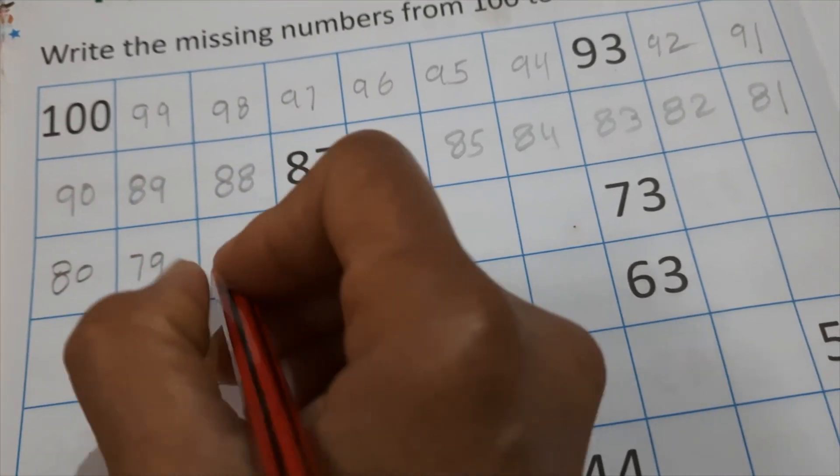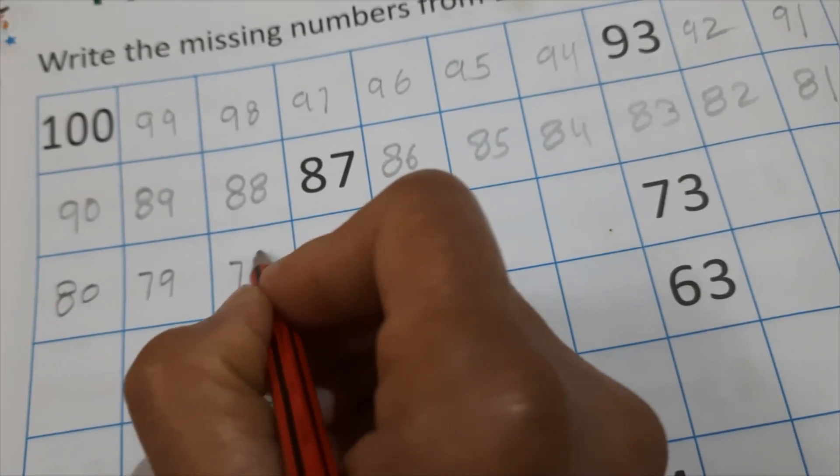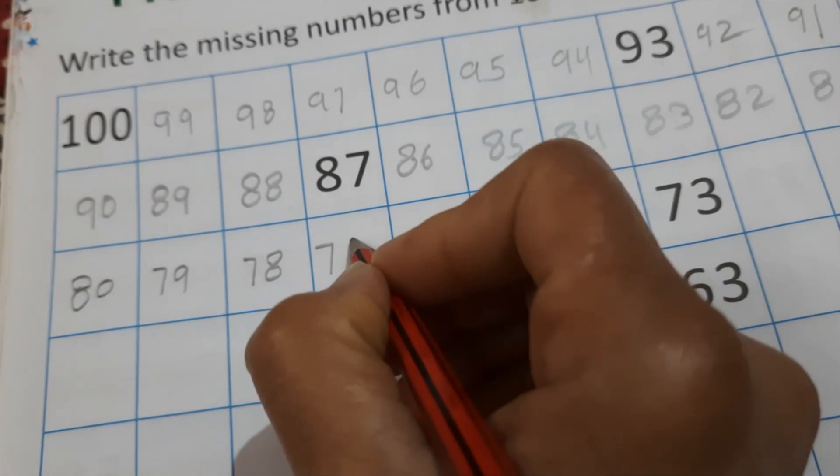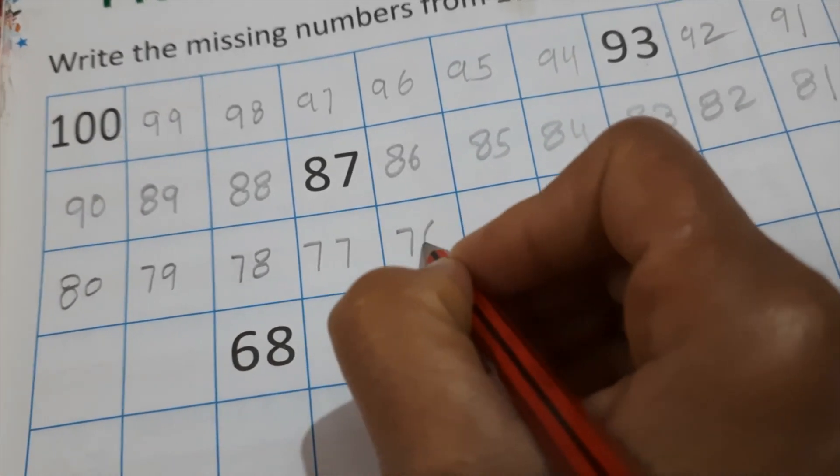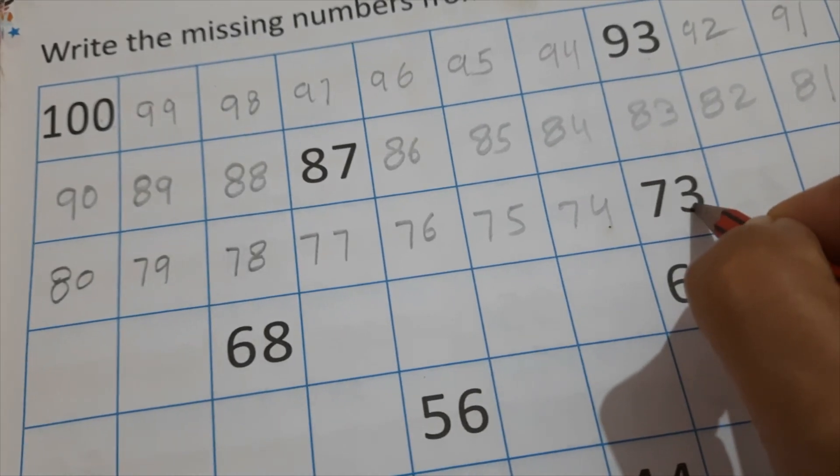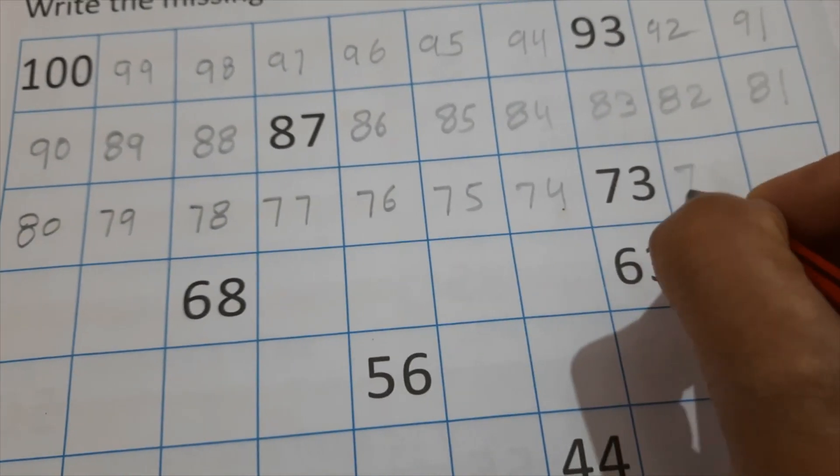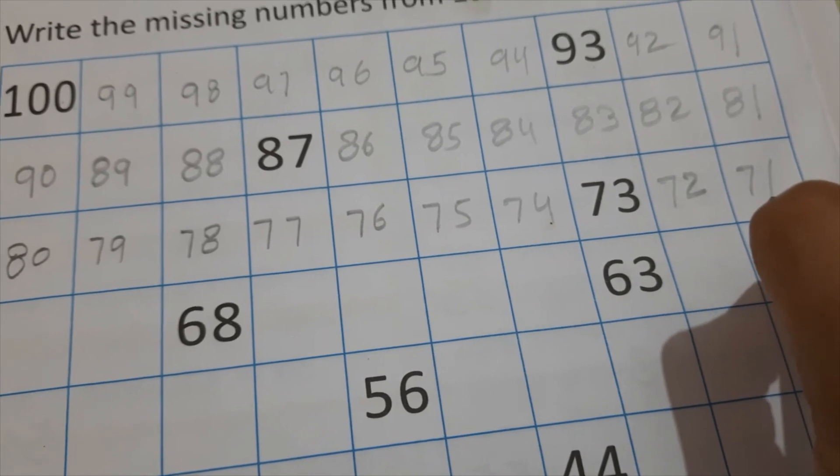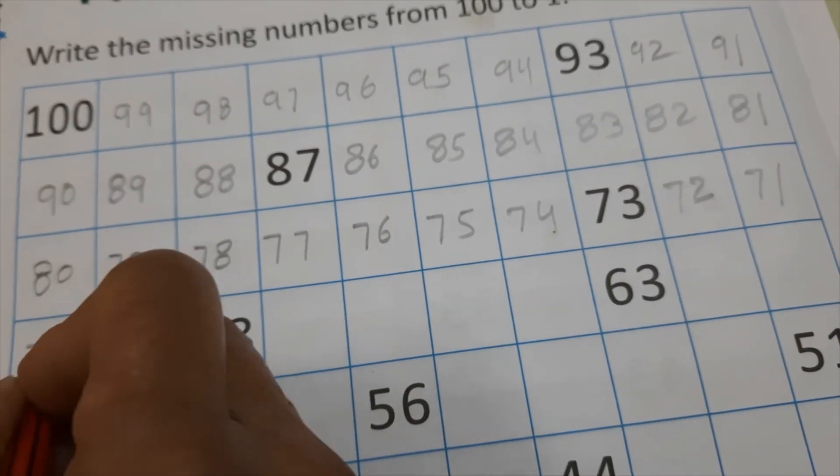79, 78, 77, 76, 75, 74, 73 is already right. 72, 71, and 70.